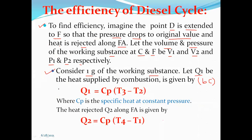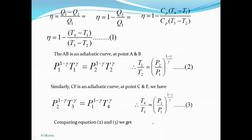The amount of Q1 is equal to Cp into (T3 minus T2), where Cp is the specific heat at constant pressure. Therefore, the heat rejected Q2 along FA is given by Q2 equal to Cv into (T4 minus T1). According to the Carnot heat engine, efficiency eta equals (Q1 minus Q2) divided by Q1, where (Q1 minus Q2) is the output and Q1 is the input in terms of heat energy.